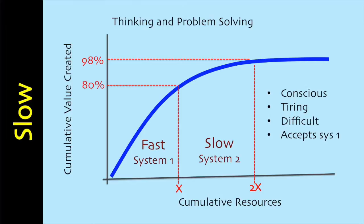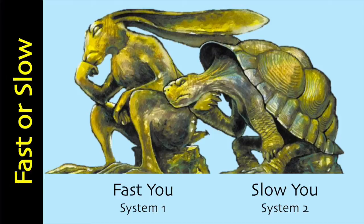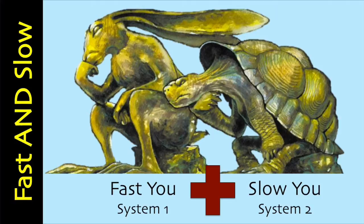System 1 is, for the most part, pretty good at what it does. However, there is a price to be paid for speed — System 1 loves to simplify. System 2 is the conscious being that we call I. But System 1 you is just as much you as System 2 you. Daniel Kahneman compares System 2 to a supporting character who believes herself to be the lead actor, and often has little or no idea of what's going on.